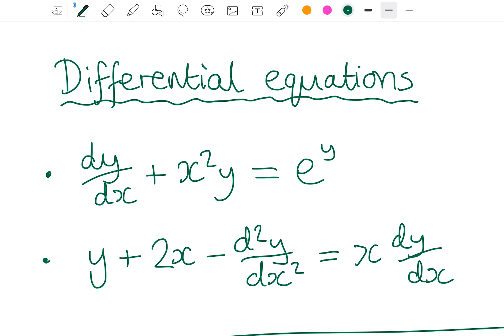So in this first example I just have dy by dx, and I have some x's and y's. In the second example I have d²y by dx², that's the second derivative, and we'd call that a second order differential equation.